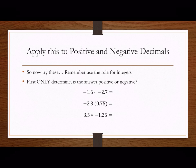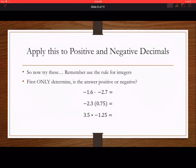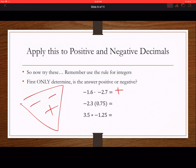The first thing we're going to do is only determine whether our answer is positive or negative. Using our Pizza Man: a negative times a negative equals a positive, a negative times a positive equals a negative, and a positive times a negative equals a negative.